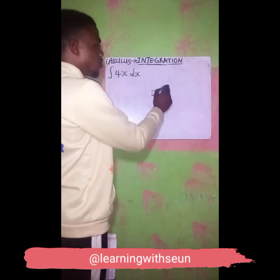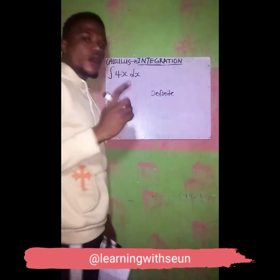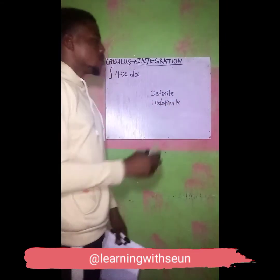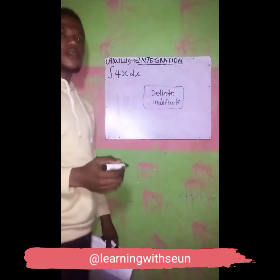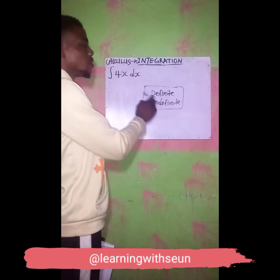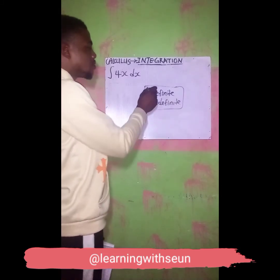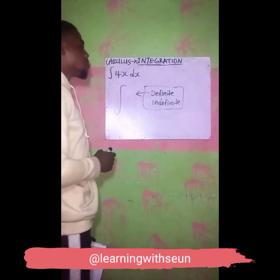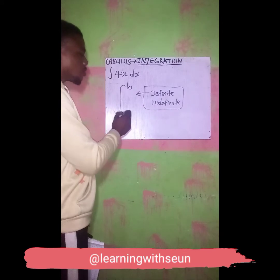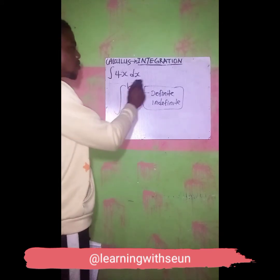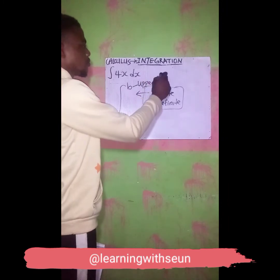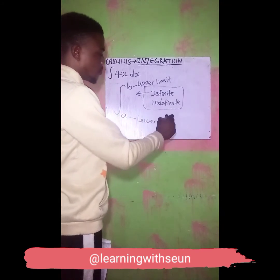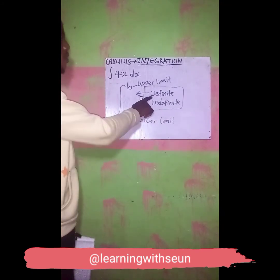We have definite integration and we have indefinite integration. These are the two major types. If you are talking about definite integration, a definite integration is an integration that has an upper limit and a lower limit. This will be the upper limit and this will be the lower limit. This is what we call definite integration.